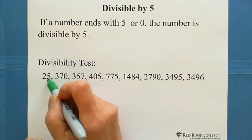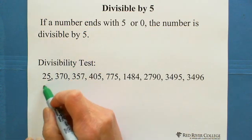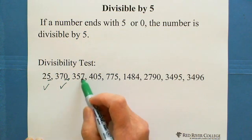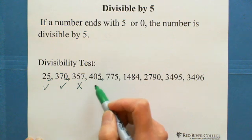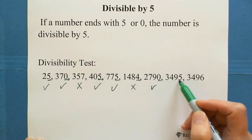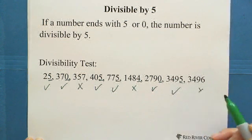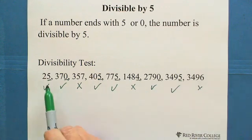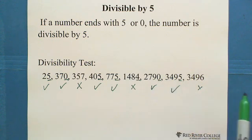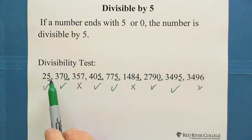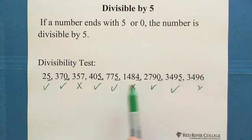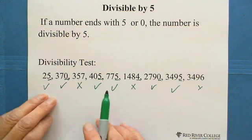For example: 25 ends with 5 — divisible by 5. Ends with 0 — yes. Ends with 5 — yes. Ends with 7 — no. Ends with 5 — yes. Ends with 5 — yes. Ends with 4 — no. Ends with 0 — yes. Ends with 5 — yes. Ends with 6 — no. Whatever the number of digits — 2, 3, 4, or 5 digits — as long as the last digit is 5 or 0, it's divisible by 5; otherwise it's not.